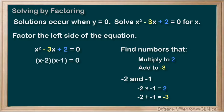That means that we need to find values of x that will make x minus 2 times x minus 1 equals 0 true. In order for that to happen, x minus 2 needs to equal 0 or x minus 1 needs to equal 0. So x equals 2 and x equals 1 are both our solutions.